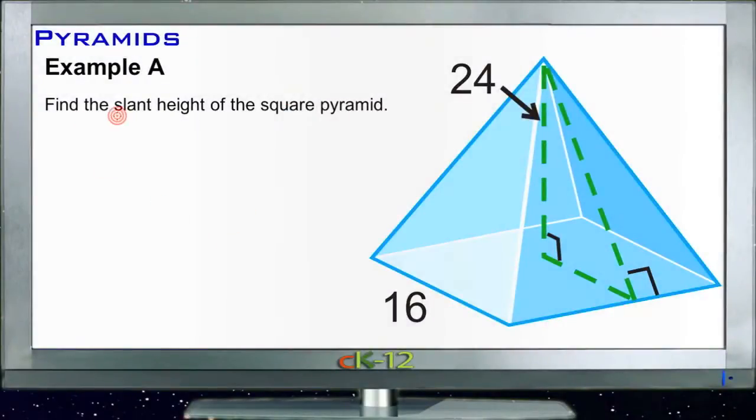Alright, for example A, we need to find the slant height of this square pyramid here. Now the slant height is that unit that was labeled L in our discussion earlier, and it's this dotted line out here that runs down the side of the pyramid. What we need to do to find that measurement is recognize that we can form a triangle right up to the center of that pyramid.